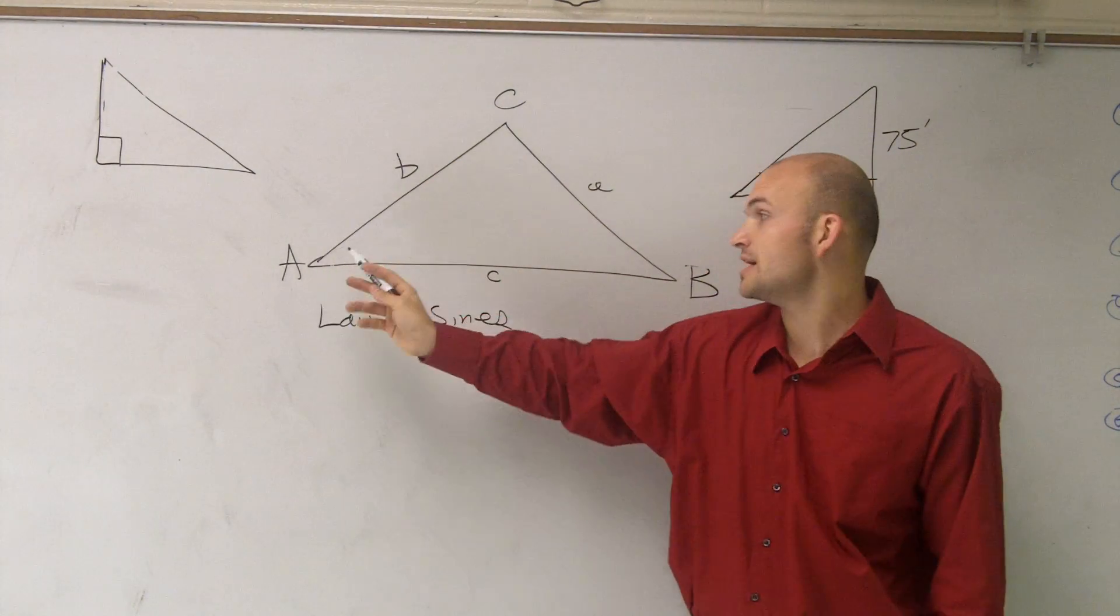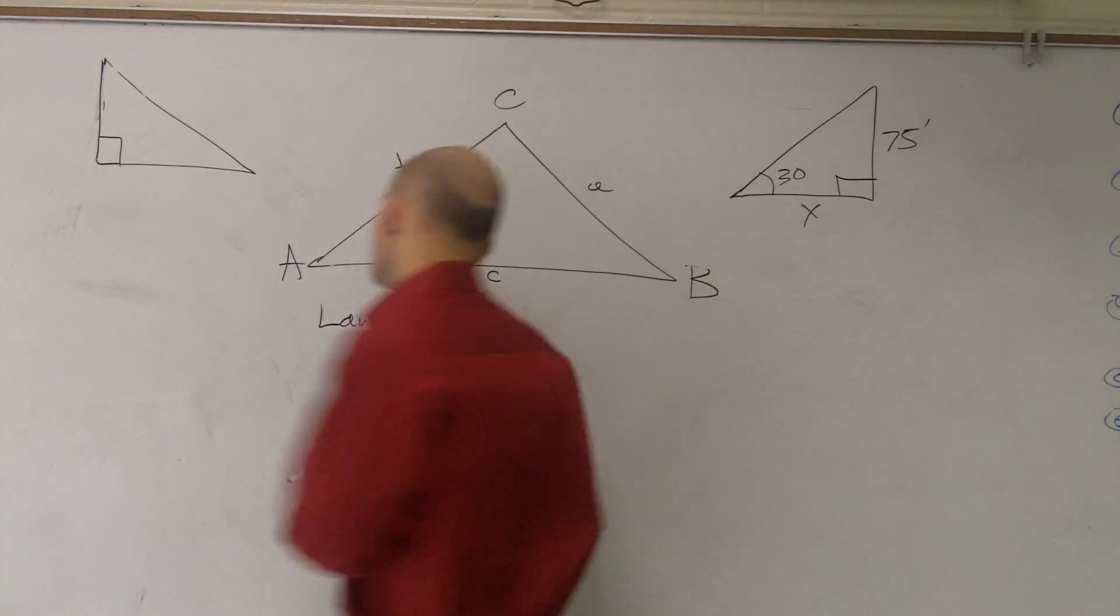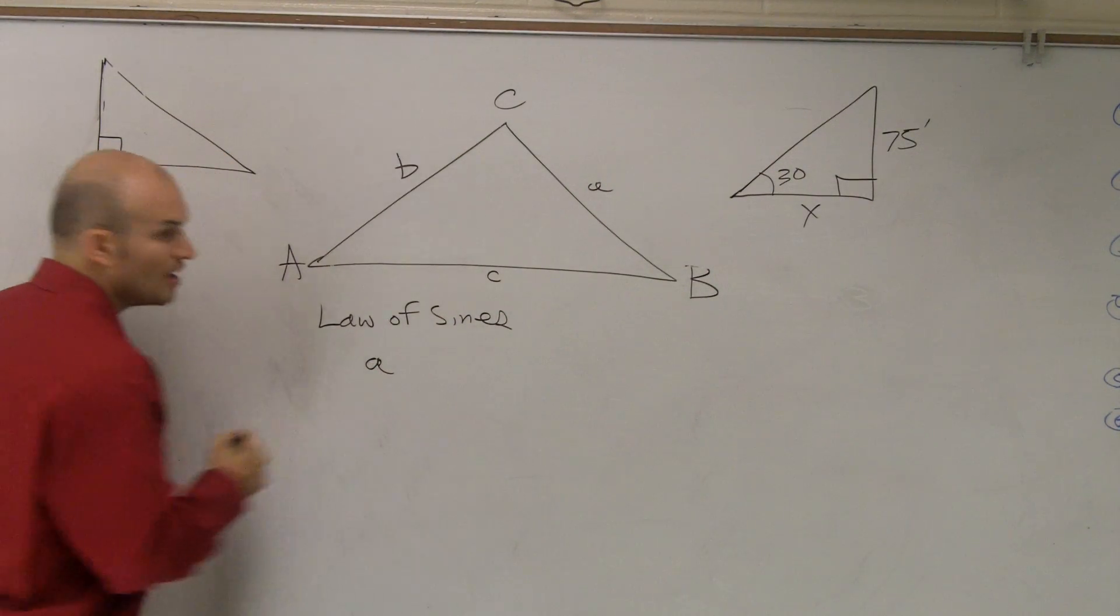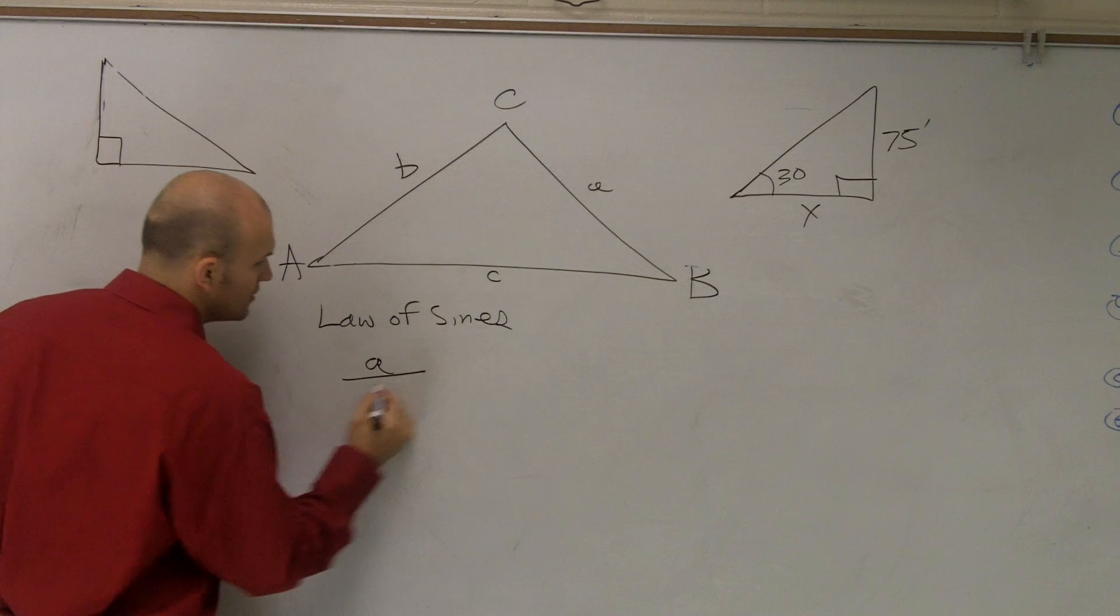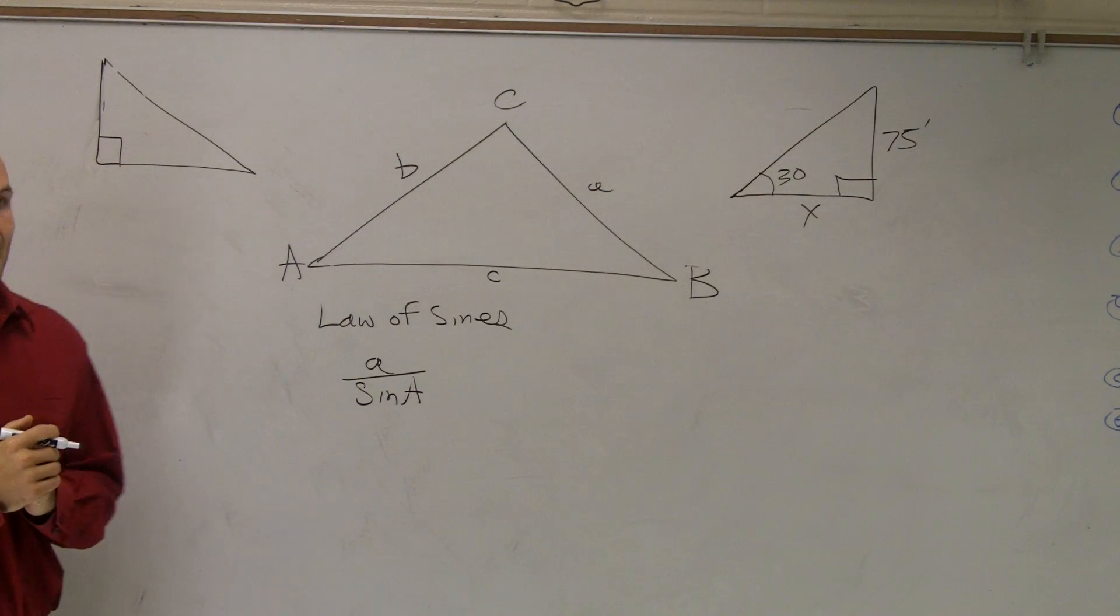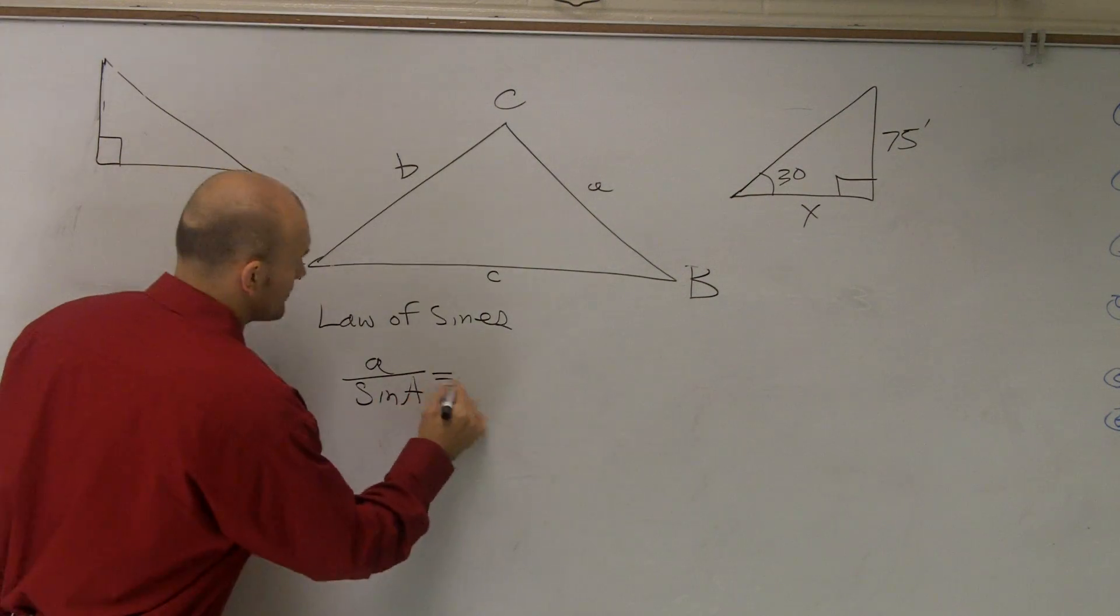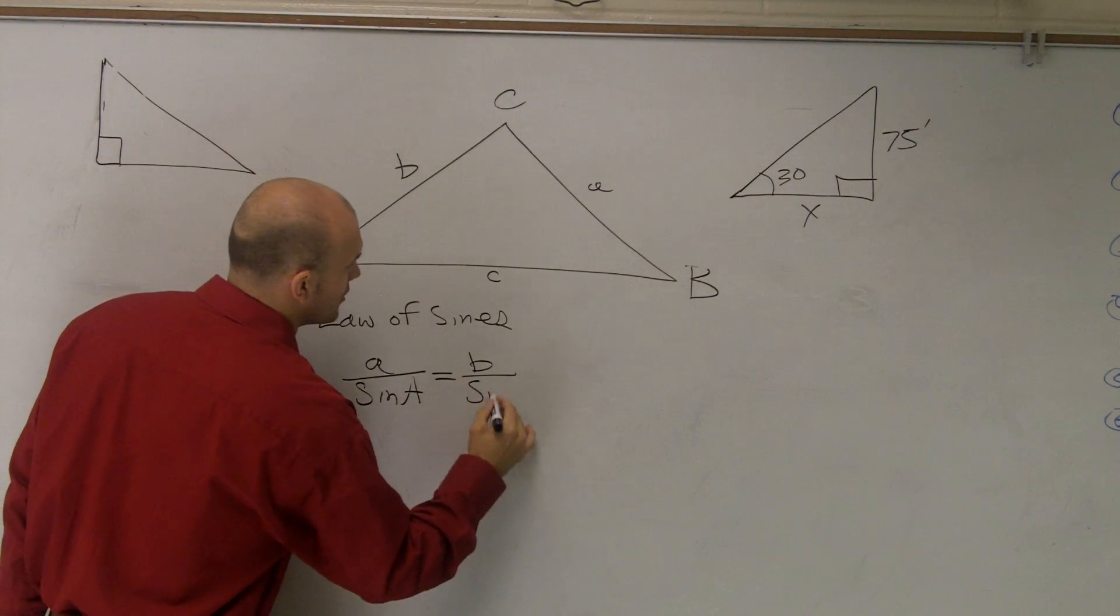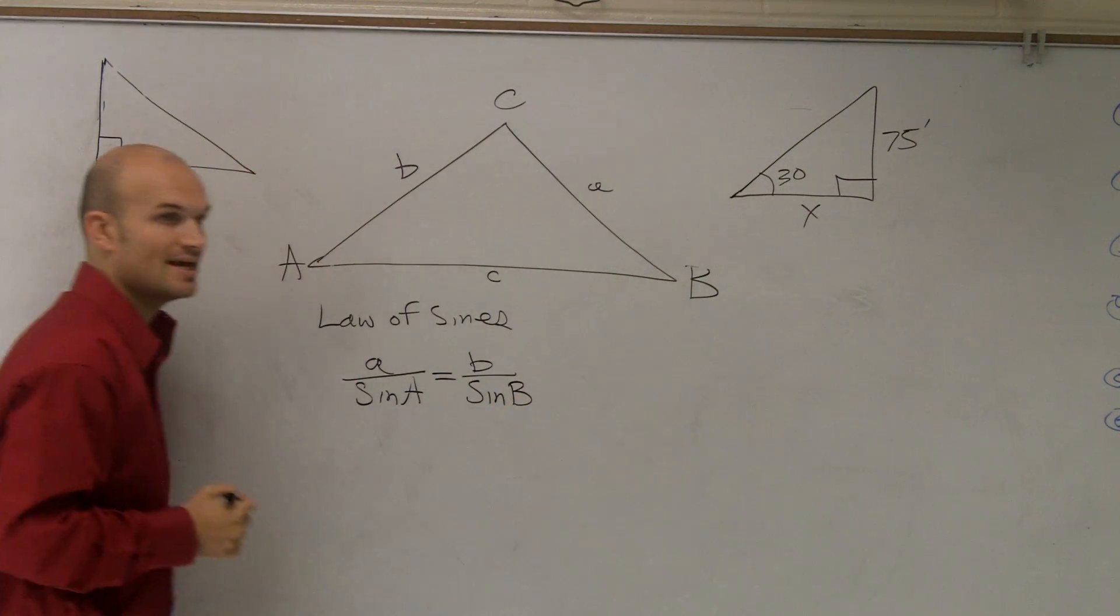So what the law of sines states is the length of a side of your triangle divided by the sine of that angle is proportionally equal to that same ratio of each side length and its angle.